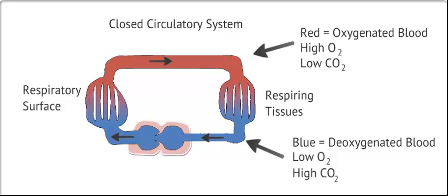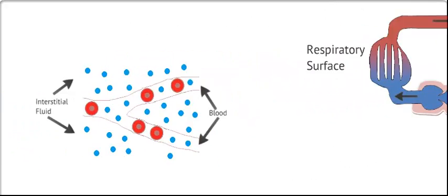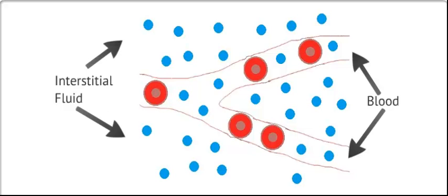Humans and all vertebrates have a closed circulatory system. It is still used to distribute materials throughout the body and participate in gas exchange. It is just that the blood is distinct from the interstitial fluid.